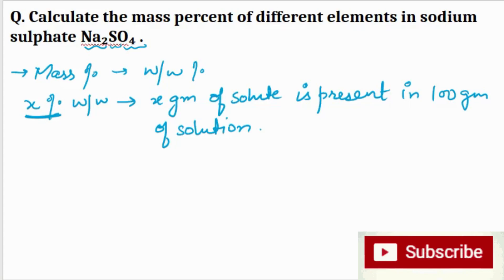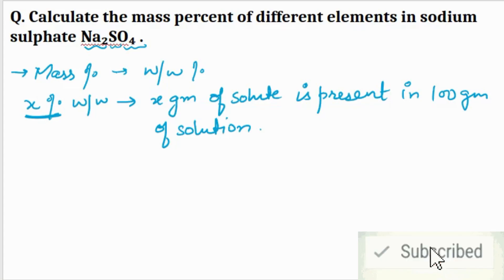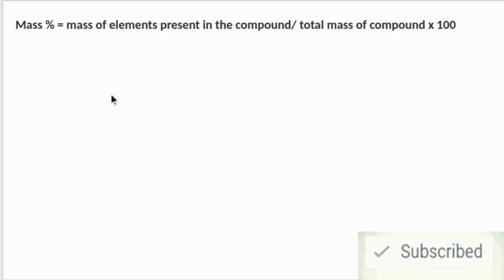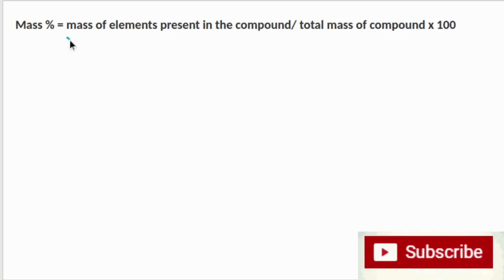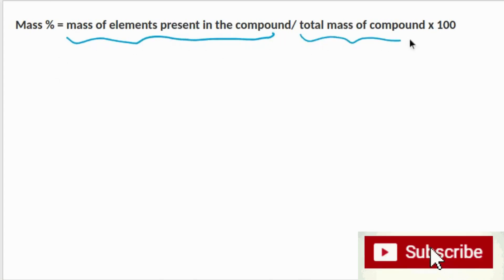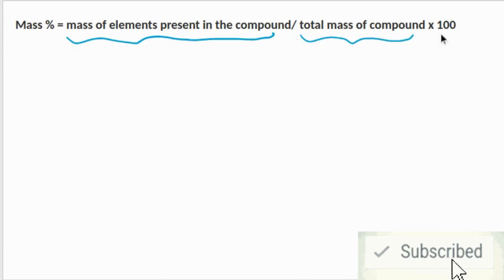Now, what is the formula for mass percent? The formula is: mass of element present in the compound, divided by the total mass of the compound, multiplied by 100.